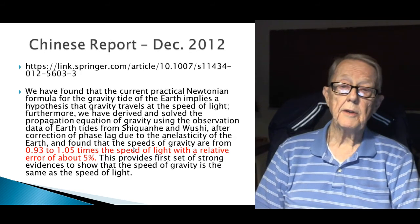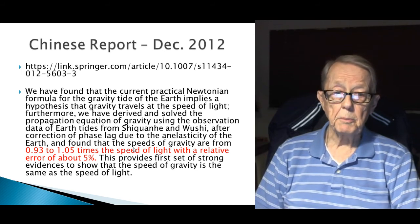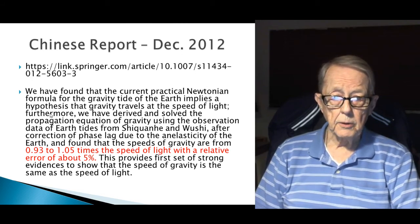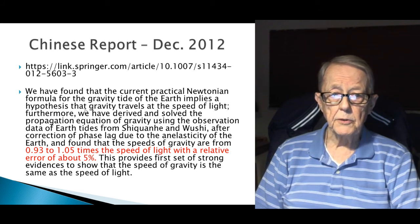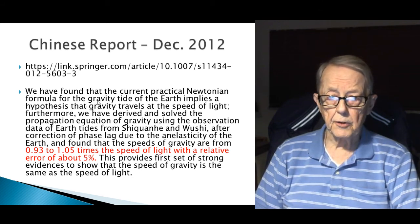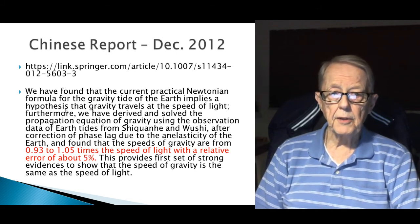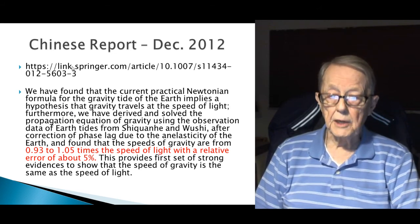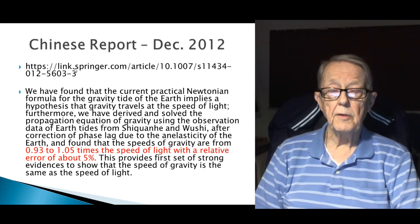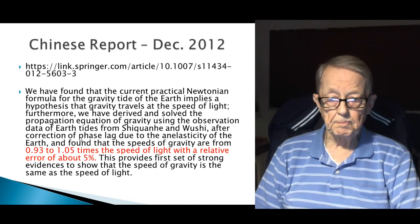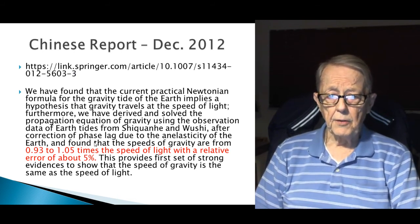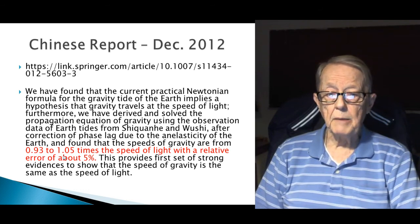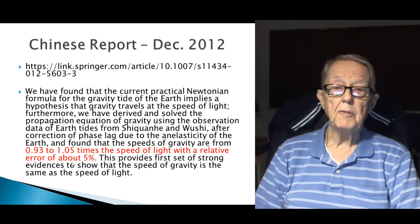As confirmation of that, in 2012, there was a report released by a group of Chinese. There's the link to it. This is the abstract. We have found that the current practical Newtonian formula for gravity tide of the earth implies a hypothesis that gravity travels at the speed of light. You can go to this link and read the report in detail. You'll find they did a very credible job. This is their conclusion. Specifically, they found the speeds of gravity are from 0.93 to 1.05 times the speed of light, with a relative error of about 5%.